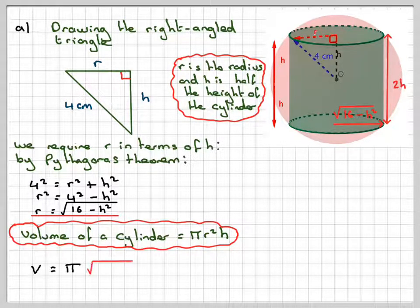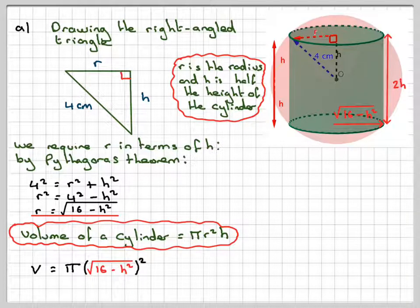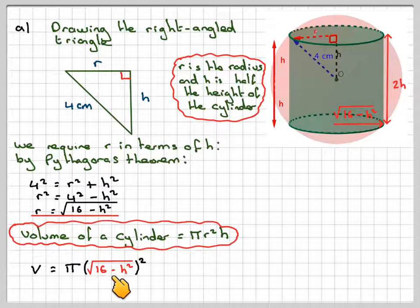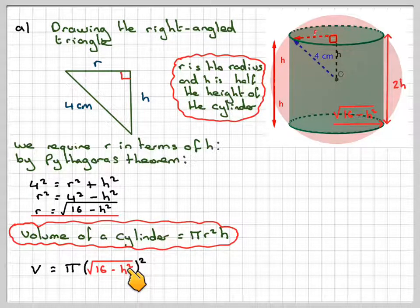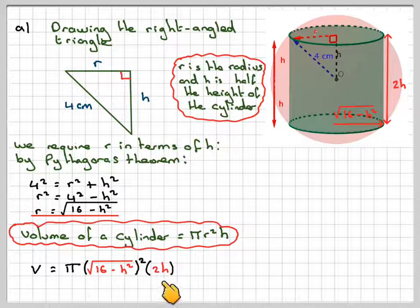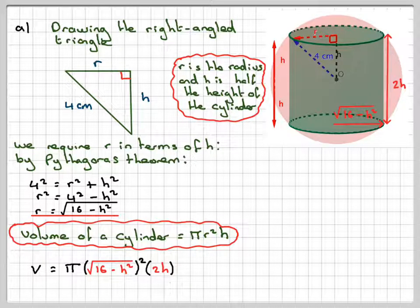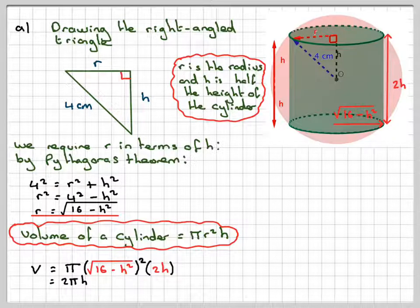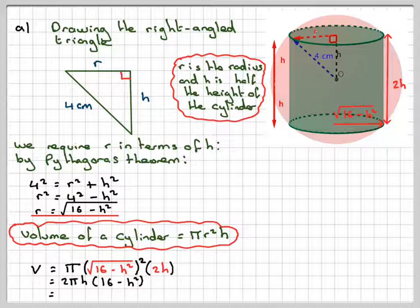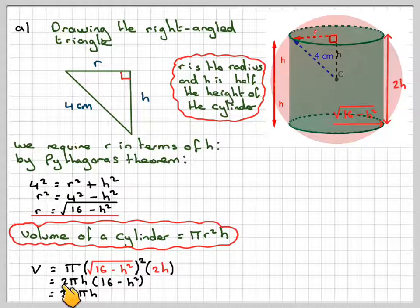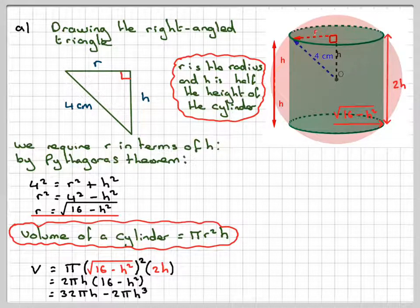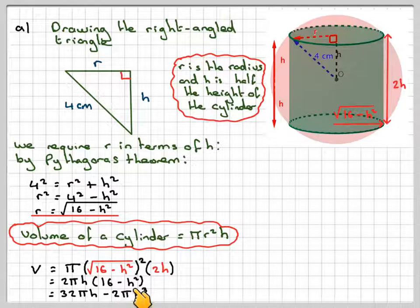So substituting, we're going to have v is π r. So r is going to be the square root of 16 minus h squared. And then we're going to need to square that times the height of the cylinder, which is 2h. So you're going to have 2π h of 16 minus h squared. And expanding that, we're going to get 2 times 16, which is 32, and then we've got π h minus 2π h cubed.